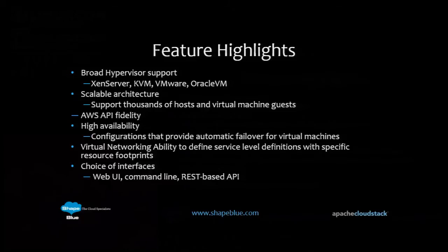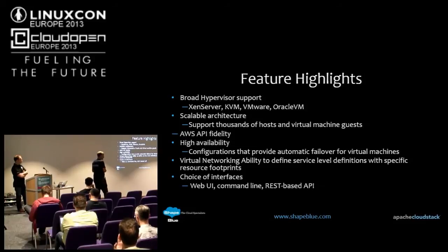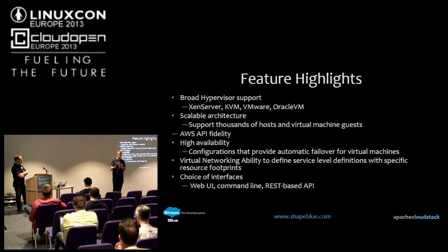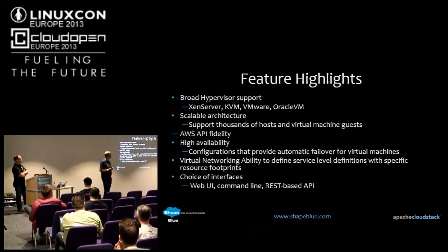In terms of what CloudStack does, some key points: broad hypervisor support, and a scalable architecture. The largest single cloud built on CloudStack has 35,000 to 36,000 and counting physical hosts, controlled from just four CloudStack management servers — two HA pairs. From a scalability viewpoint, two management servers would control all of those hosts.